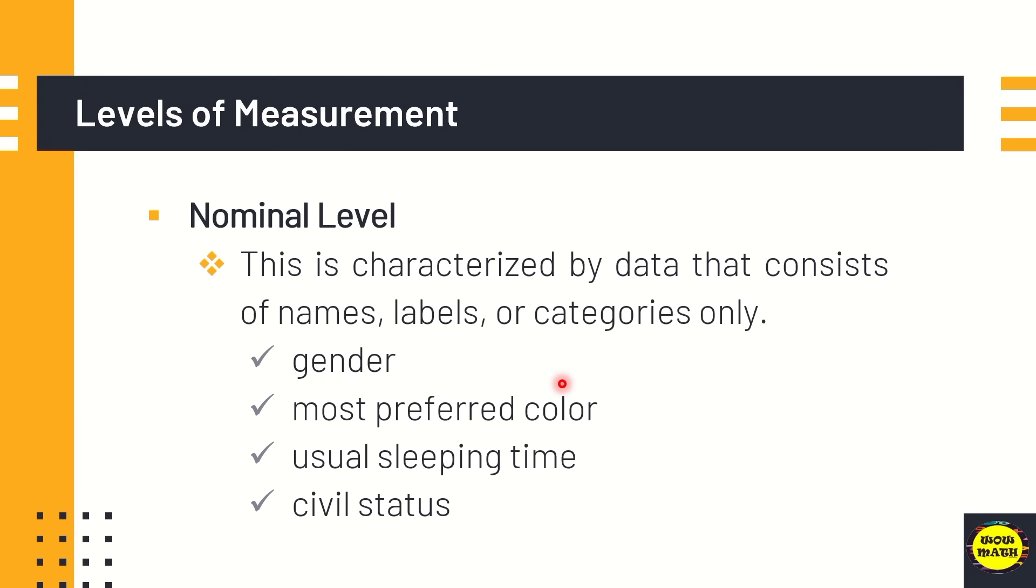This is the other example of the variables measured at the nominal level include your gender, like yes, the marital status, religious affiliation. So for the study on the validity of the statement regarding effect of breakfast and school performance, students who responded yes to question. This is an example of nominal levels.